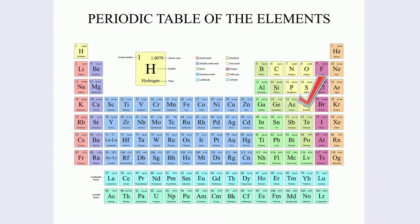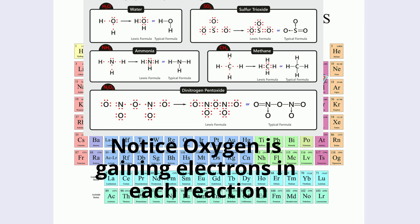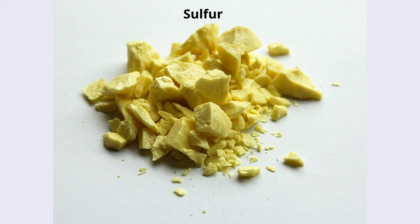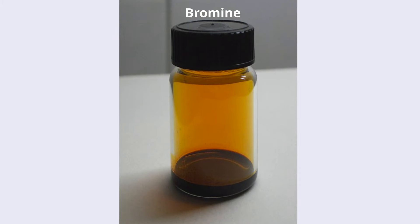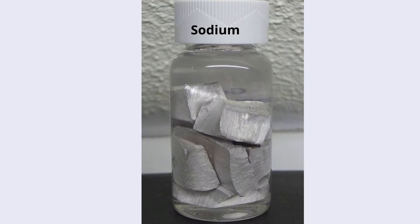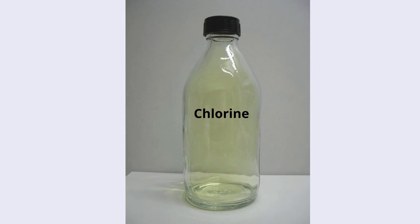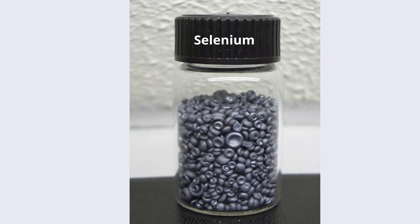Due to the arrangement of the valence electrons, they tend to gain electrons. A couple examples of some common non-metals would be as follows. As you can see, they range from gases to solids.